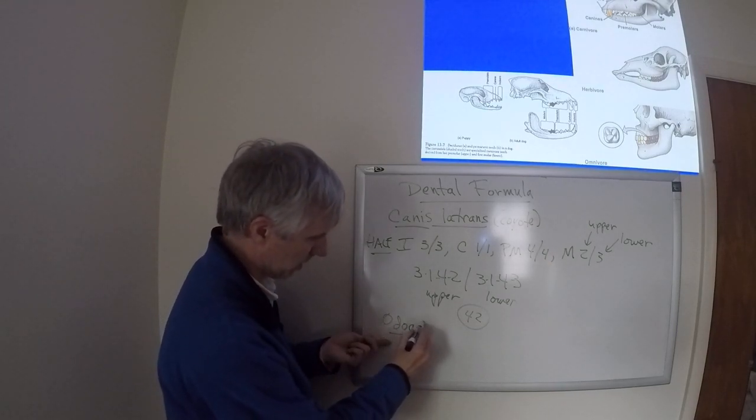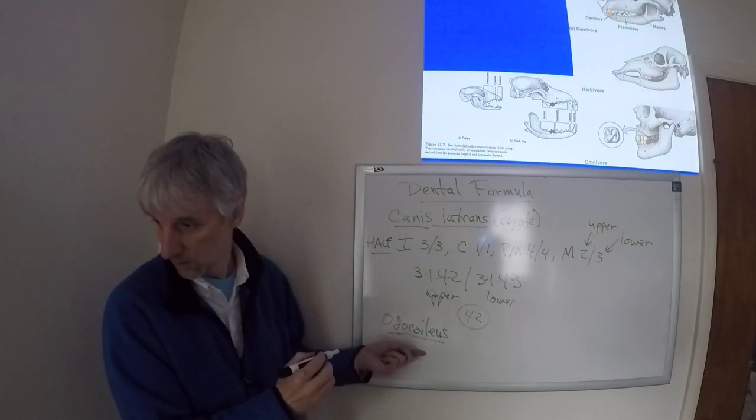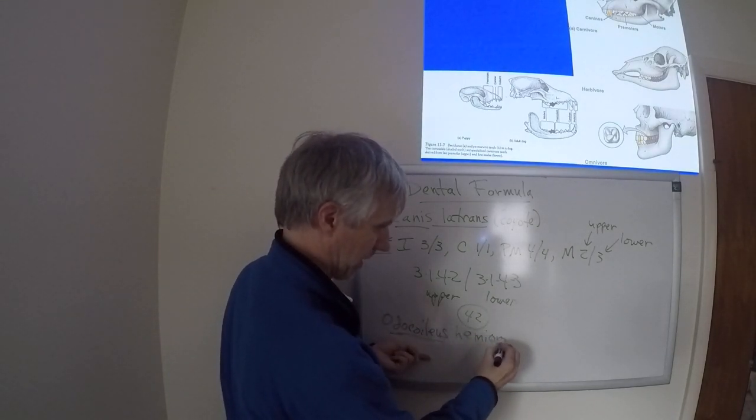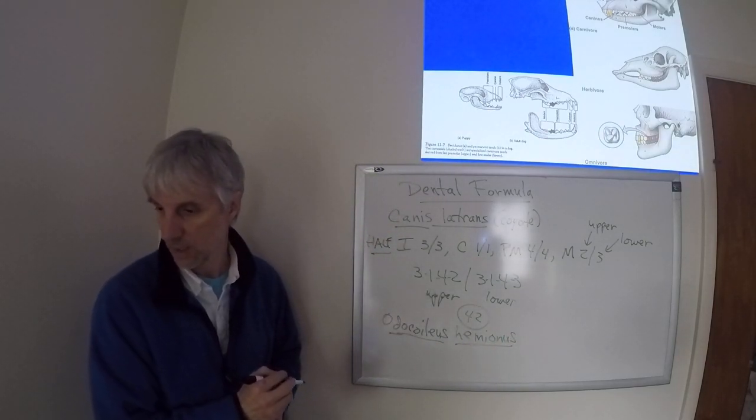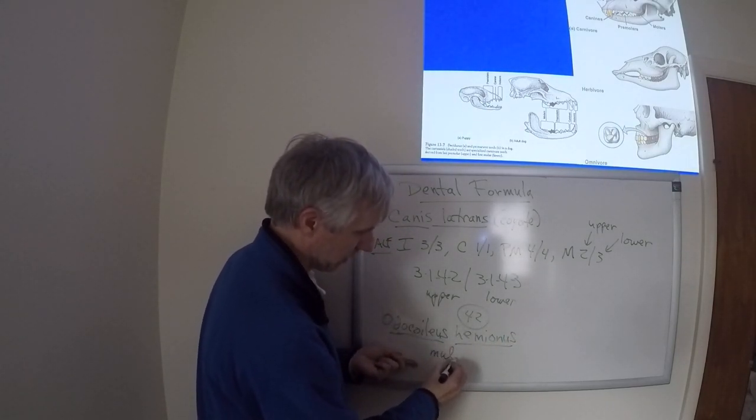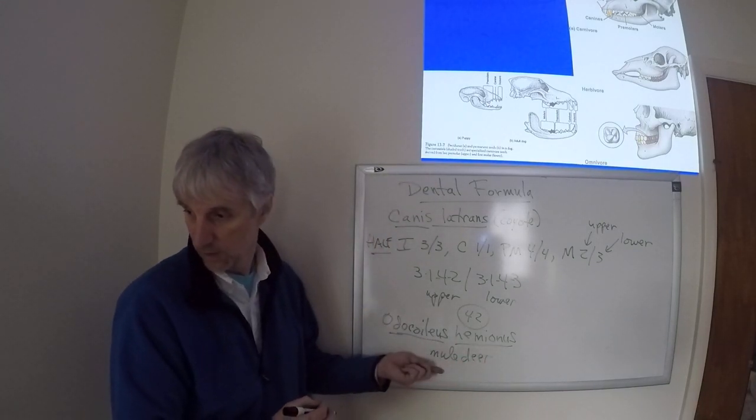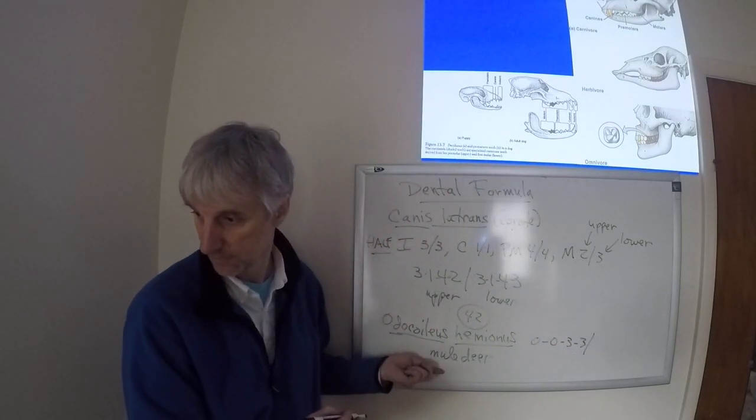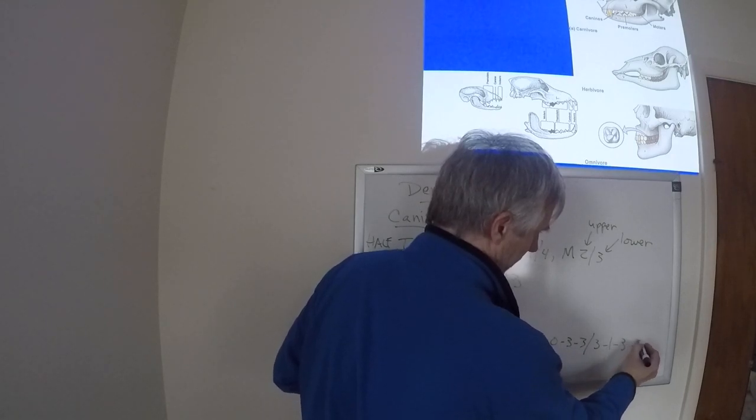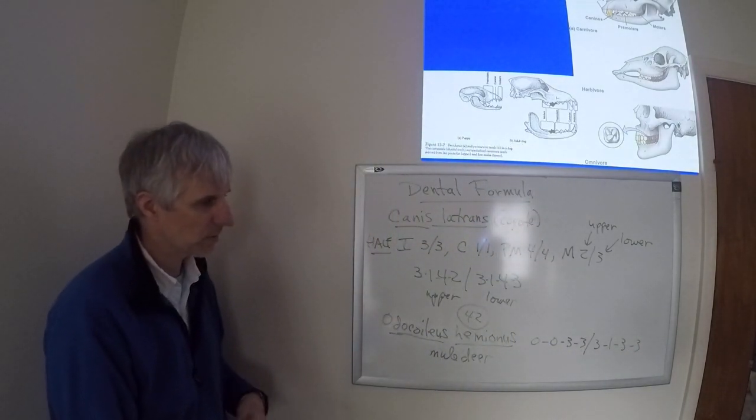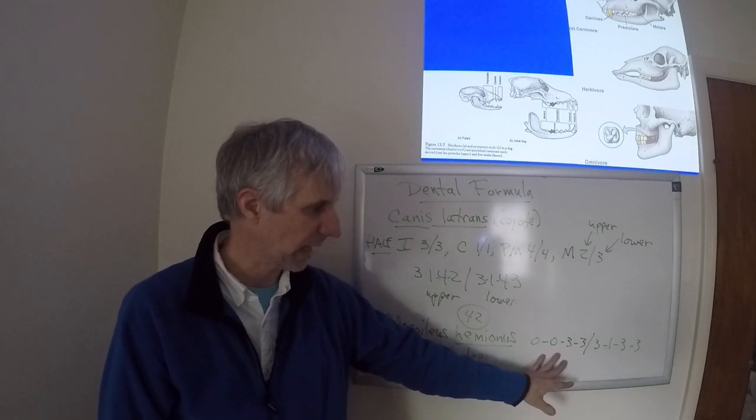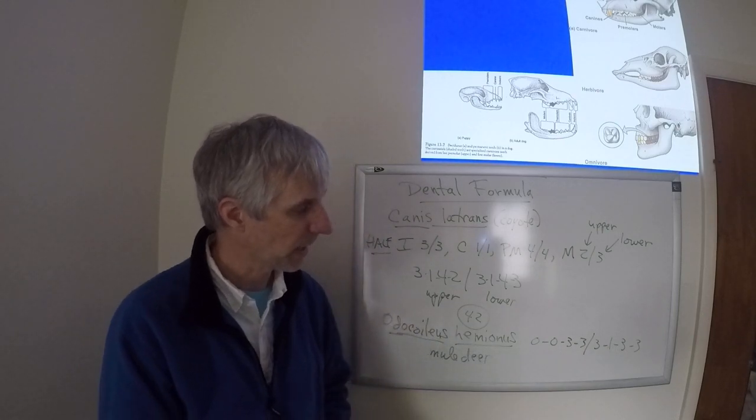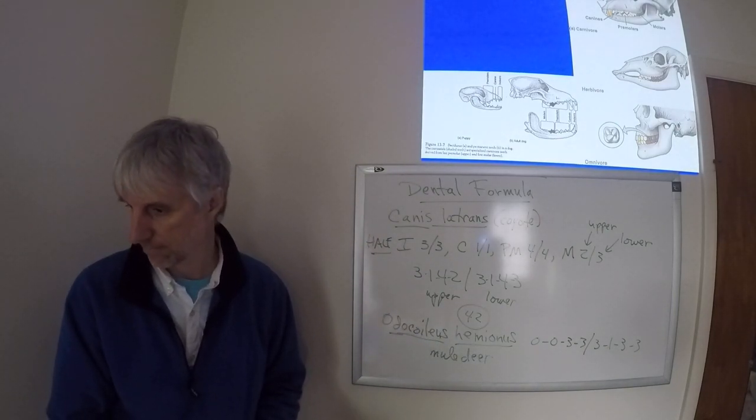I'd also have Odocoileus - that's a mule deer. Its dental formula looks like this. So the total number of incisors would be six. There aren't any on the upper jaw, but the lower jaw contains six, three on each side.